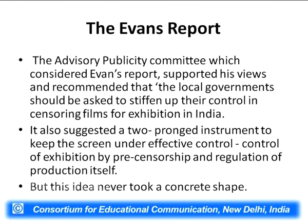However, the idea of pre-censorship never took a concrete shape in India, even though the British were seriously pondering how pre-censorship could be imposed on Indian films. Pre-censorship was being practiced in other parts of the world, such as fascist Italy, where film scripts were sent to the government initially so the government could decide whether films on those scripts should be made or not.